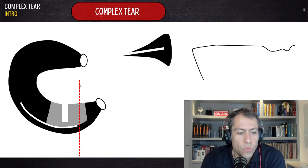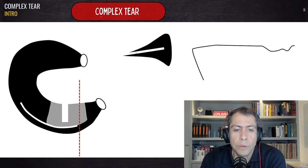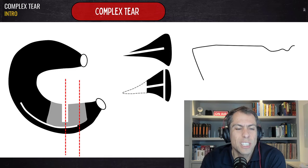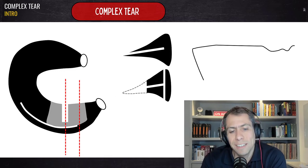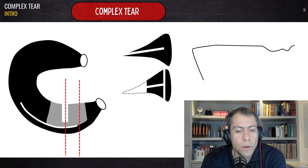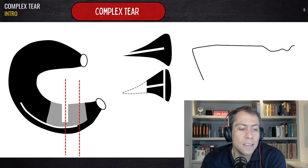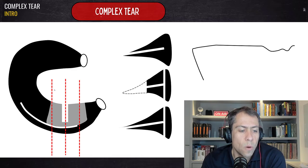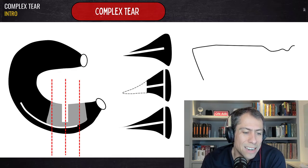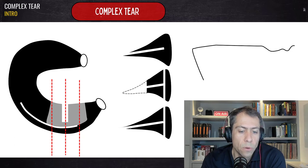In the first sagittal slice we can see the horizontal tear. In the second slice passing through the radial tear, we can see the partial radial tear, the horizontal tear, and the vertical longitudinal tear. In the last slice more laterally, we can identify two different components of this complex tear: the horizontal component and the vertical longitudinal component.